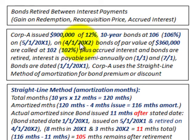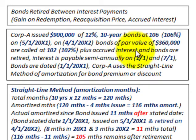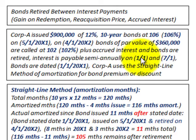On 4-1-20X2, bonds with a par value of $360,000 are going to be called at 102% of their par value, plus accrued interest will have to be paid on these bonds, and then the bonds are going to be retired. Interest is payable semi-annually on January 1st and July 1st each year, and the bonds are dated 1-1-20X1.